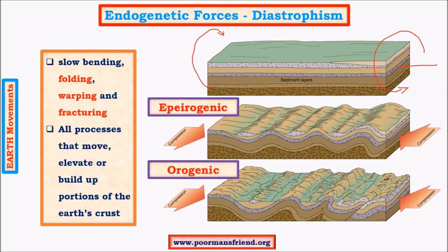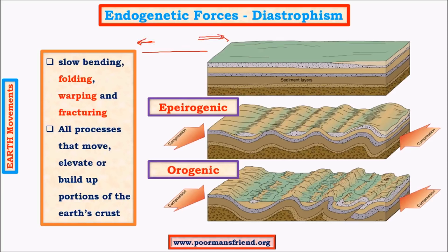The twist seen at the center of the landform, similar to wrapping a chocolate wrapper, is called warping. It is mainly due to rotational forces acting in two opposite directions at two opposite ends. In fracturing, when a block is subjected to tensile forces — movements in opposite directions — there is a break in the landform: one block moves right and the other left, giving rise to a fracture or crack in the center. These terms are important foundational concepts in geomorphology.